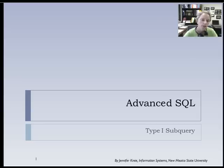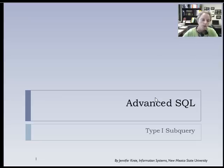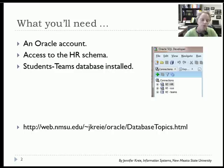In this video in the advanced SQL series, we will look at the type 1 subquery, but we will also see an example of using the upper function. There's also a lower function, and these are ways to evaluate text in a consistent manner for upper and lower case. We will delete a record and then undo that deletion using a command called rollback. We'll be working with the HR schema and also the student teams database.